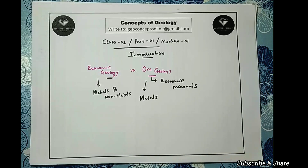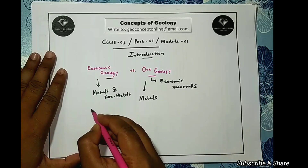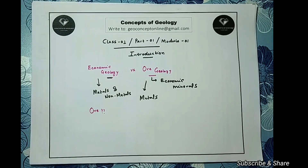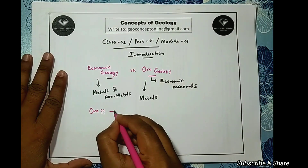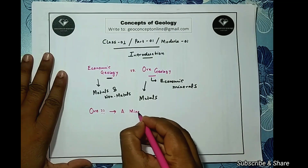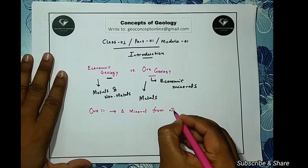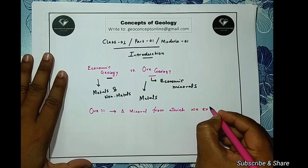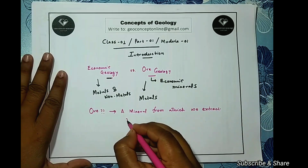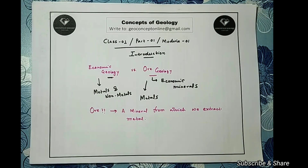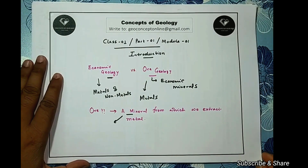Whether we study economic geology or ore geology, we first need a clear concept of what an ore actually is. The simplest answer is: ore is a mineral from which we extract metal. If we are getting a metal or a group of metals from a mineral, that mineral will be called the ore of that particular metal or group of metals. Since ore is a mineral, it should obey the conventional properties of minerals.